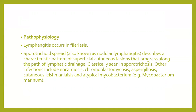This is clinically seen in sporotrichosis (a fungal infection), nocardiosis, chromoblastomycosis, aspergillosis, cutaneous leishmaniasis, and atypical mycobacteria — especially Mycobacterium marinum. The distal-most lesion is the primary lesion and is usually the largest, while the rest of the lesions on the proximal side represent the sporotrichoid spread of the primary lesion.